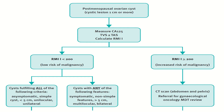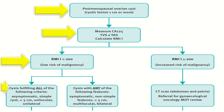This algorithm is from the COG guideline about ovarian cysts in postmenopausal women. In postmenopausal women, if the cystic lesion is one centimeter or more, we check the CA-125 and calculate the RMI. If RMI is less than 200, there is low risk of malignancy and we go for conservative management. If RMI is more than 200, there is high risk of malignancy and we do a CT scan of abdomen and pelvis, refer the patient to a gynecological oncologist, and conduct an MDT review.